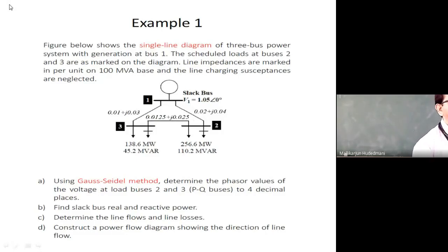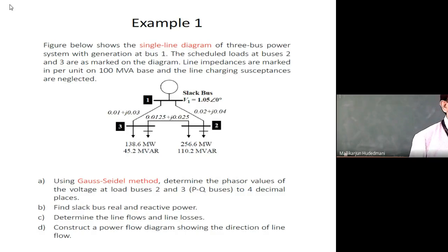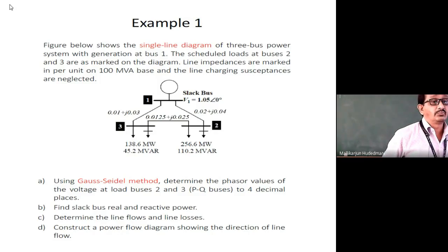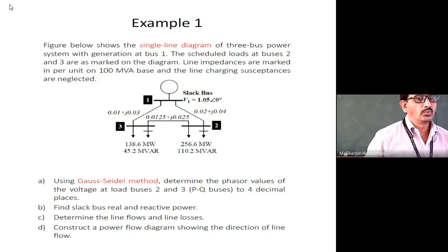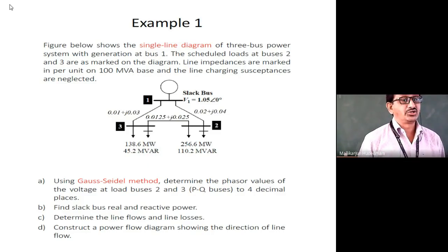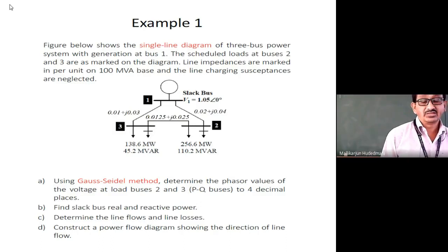Yesterday we took a simple example of how to find unknown solutions of voltage angle, power flow through transmission lines, and losses in the system. The problem discussed had three buses: bus 1 is the slack bus with voltage 1.05∠0 pu, bus 2 and bus 3 are load buses with specified megawatt and MVAR values. Transmission line data is given as impedance and the system base is 100 MVA.